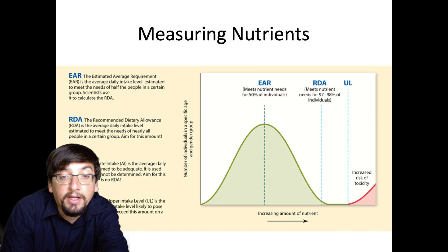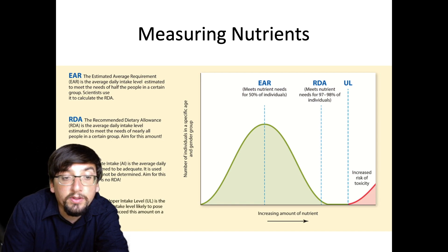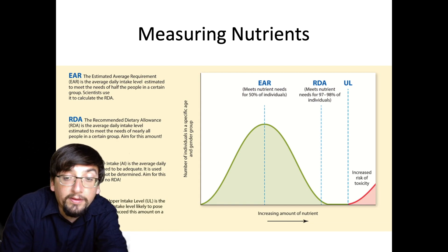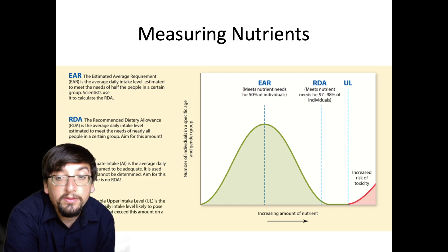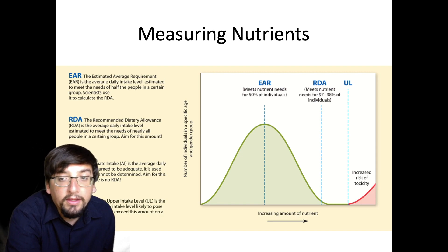If any number of things cause you to need more nutrients than average, the EAR won't be sufficient. The RDA — Recommended Dietary Allowance — is how much 97–98% of the population would normally need. For most people, if you're getting the RDA, you should be in good shape, though there may be special circumstances where you need more.